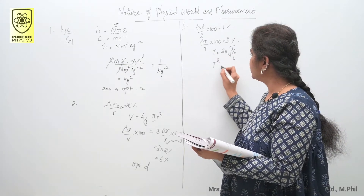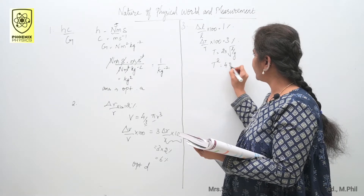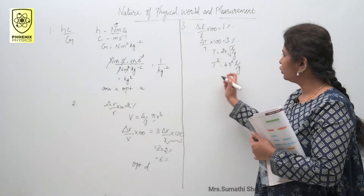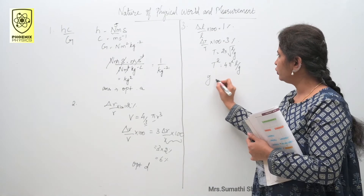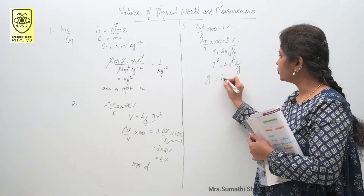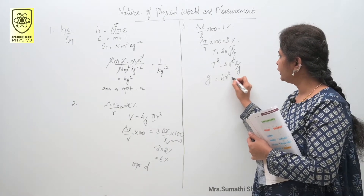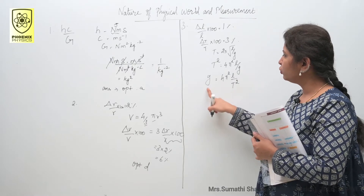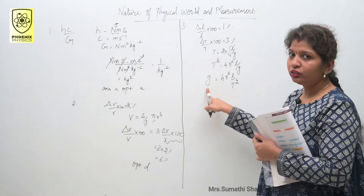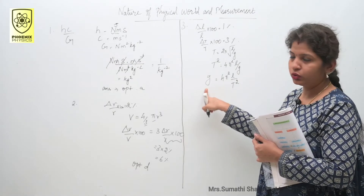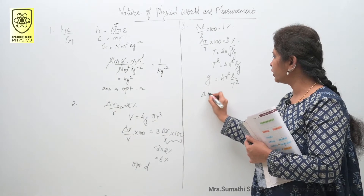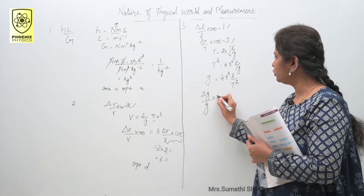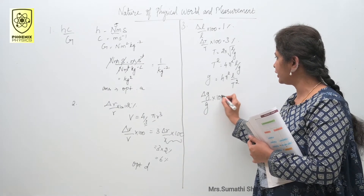Just square the equation: t² equals 4π²l/g. Rearranging, g equals 4π²l by t². You want to find the error in acceleration due to gravity, so you can write delta g by g into 100.